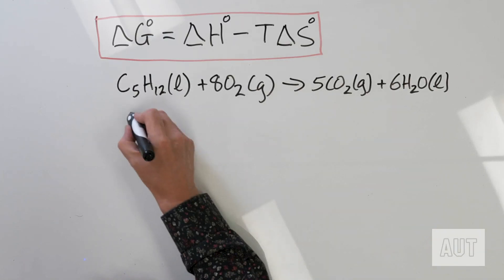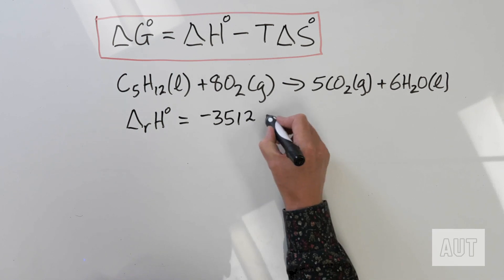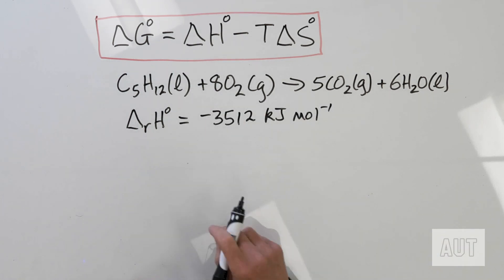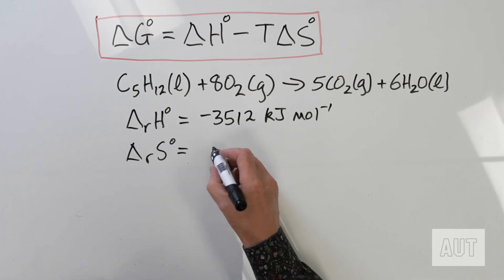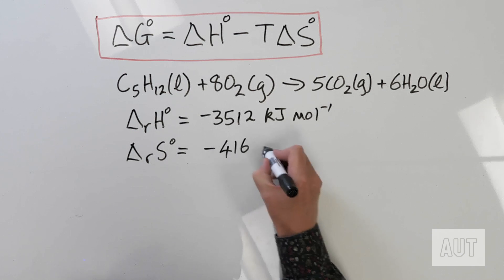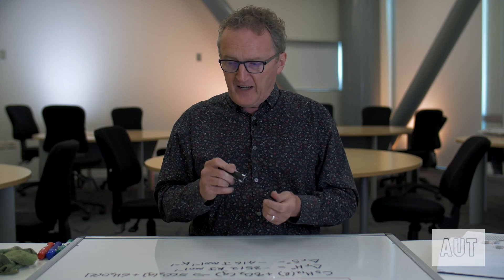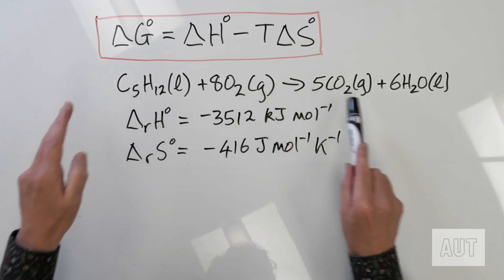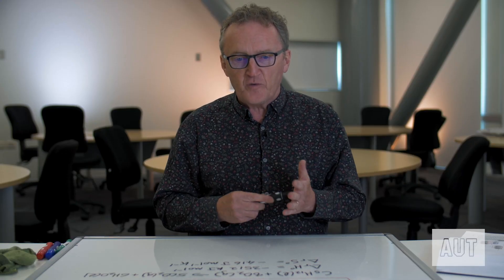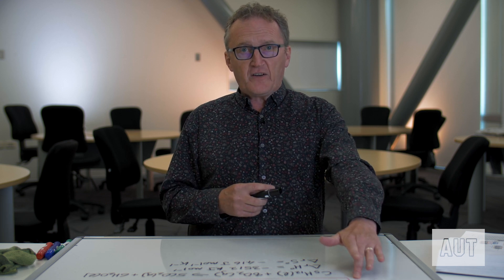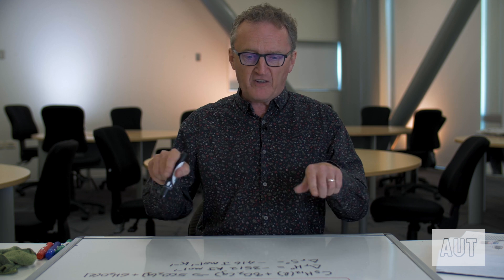For this particular reaction, ΔH° is equal to a whopping negative 3512 kJ per mole — as you'd expect for the combustion of a hydrocarbon, it gives out an awful lot of heat. And ΔS° for this is equal to minus 416 J per mol per K. We'd expect that, since we have eight moles of gas going to five moles of gas, so the entropy change should indeed be negative.